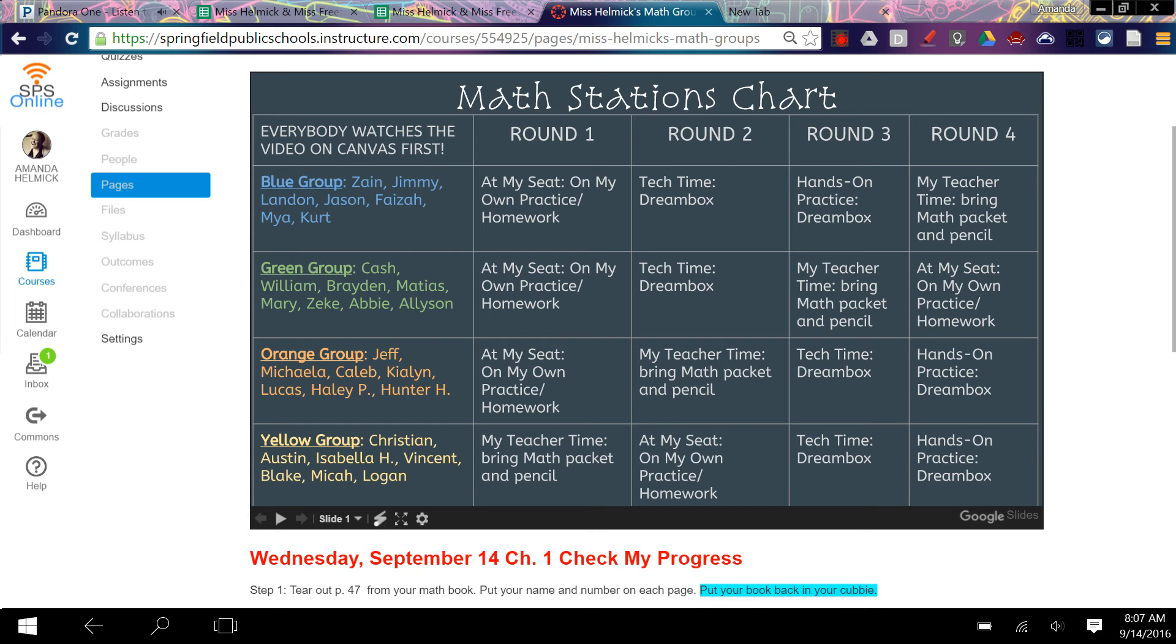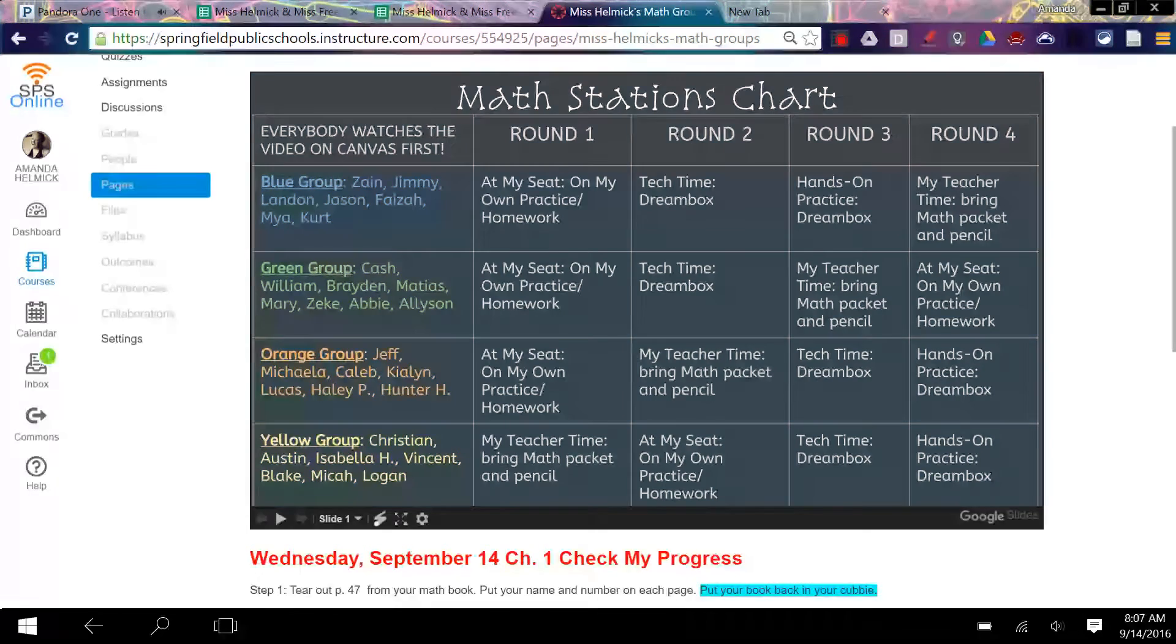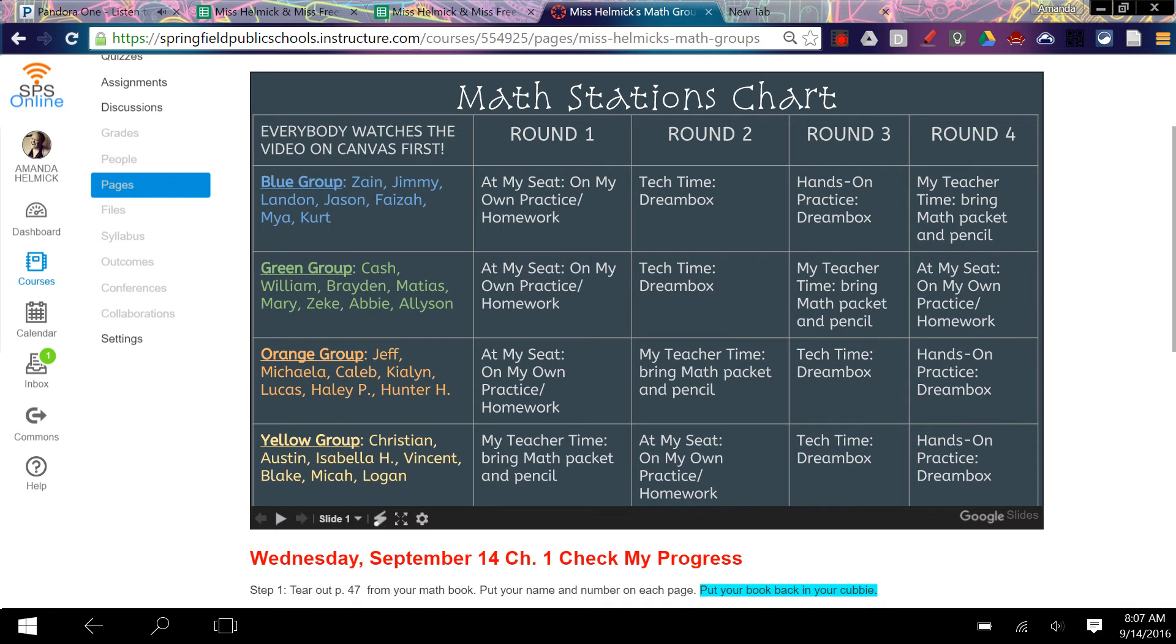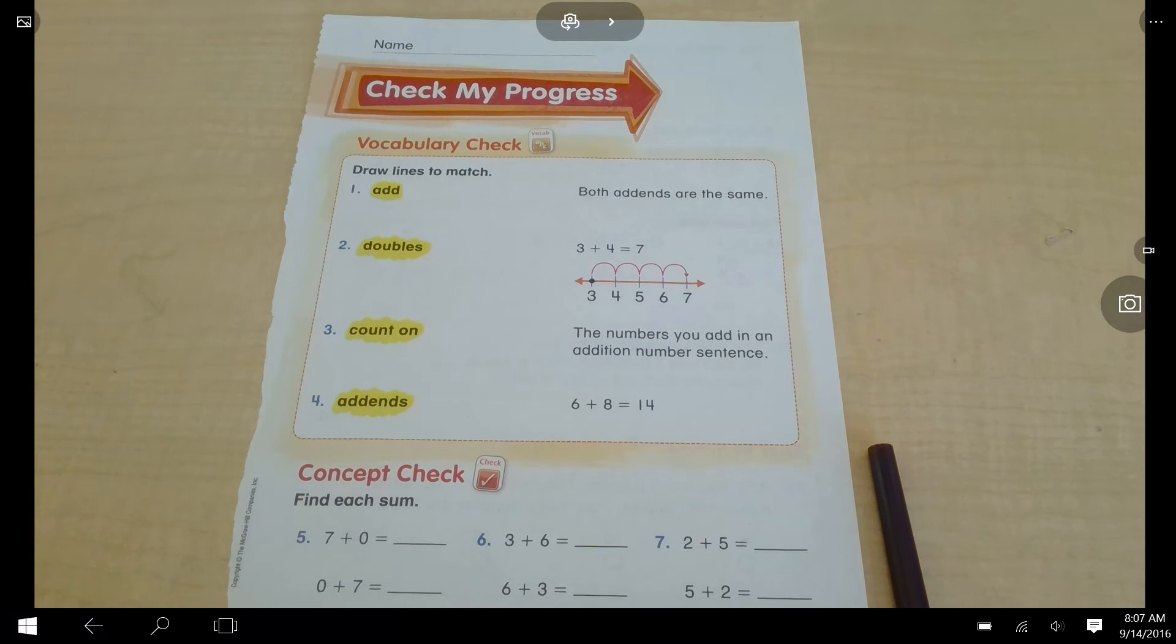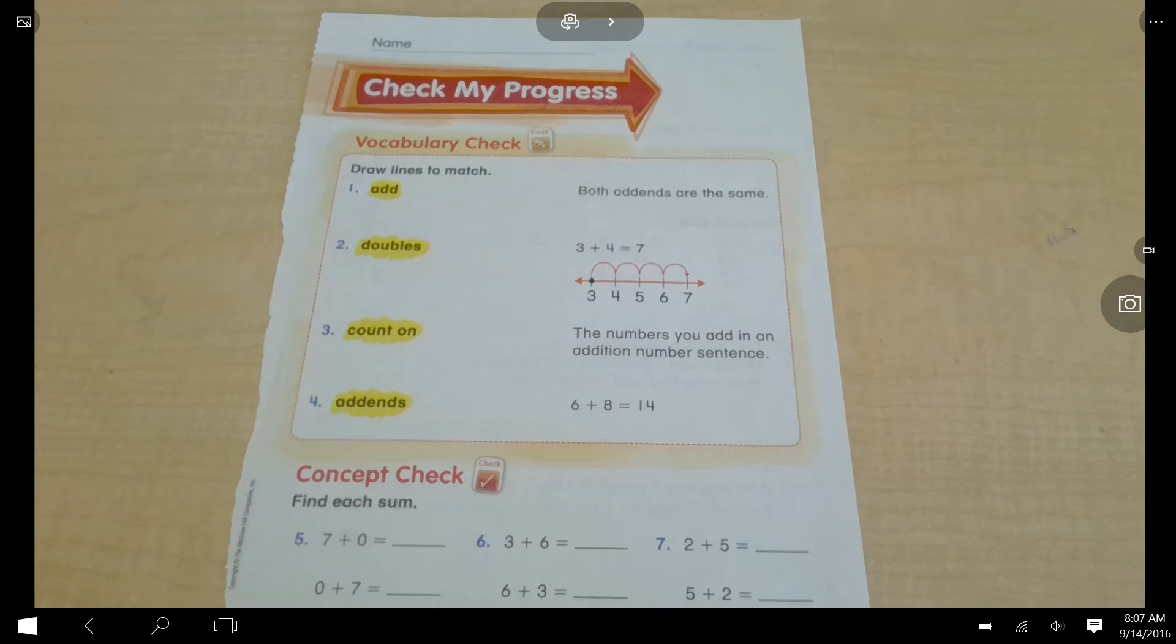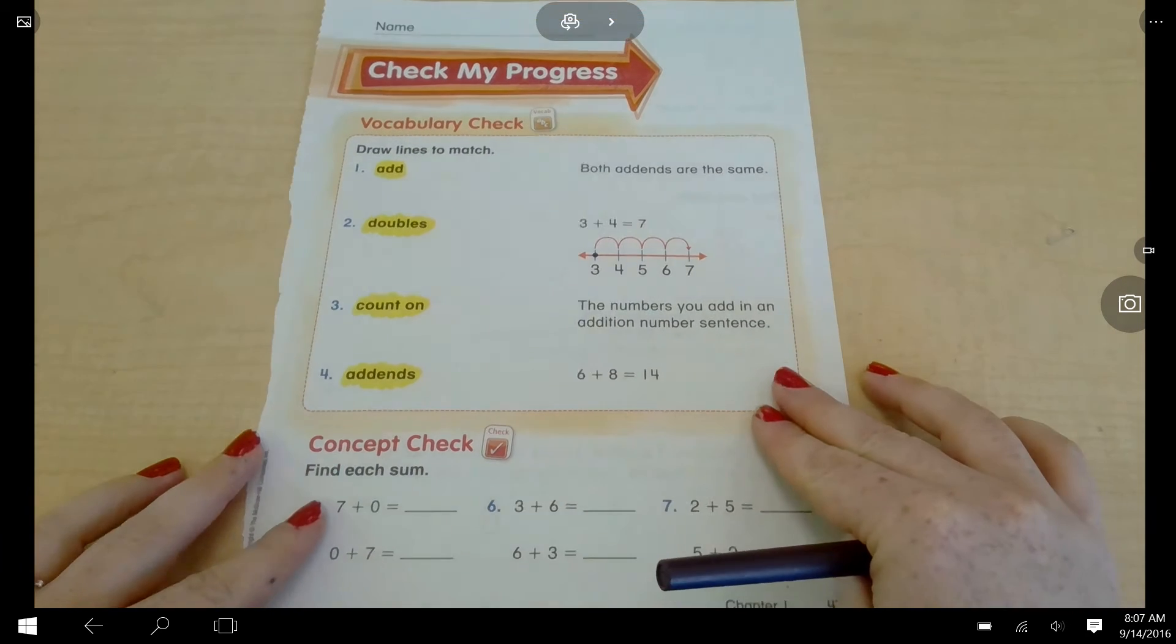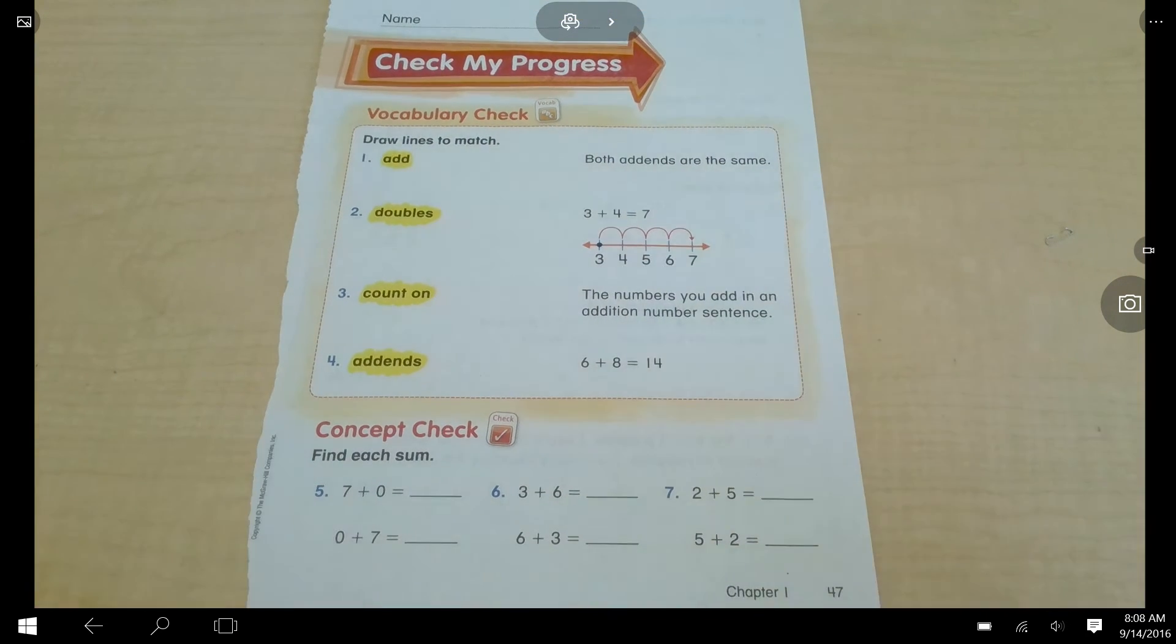Good morning friends, today it's September 14th. We're going to do our math lesson, Check My Progress. This is just for me to see what you already know. The way this lesson is going to work is it's not really a lesson, so I'm going to read the directions to you and you're going to pause the video after each direction is read to you to answer the question. Once you're done, you'll set your timer and go on Dreambox.